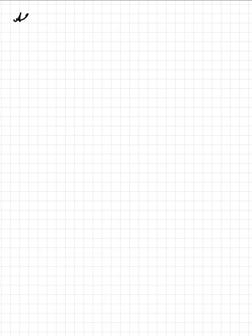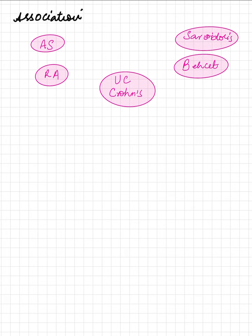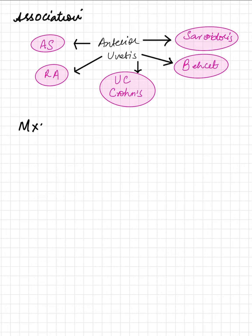Associations of anterior uveitis are very important. It is seen in ankylosing spondylitis and reactive arthritis — in reactive arthritis, along with uveitis, we have conjunctivitis. Other associations include ulcerative colitis, Crohn's disease, Behçet's disease, and sarcoidosis. In sarcoidosis, bilateral anterior uveitis is normally seen.